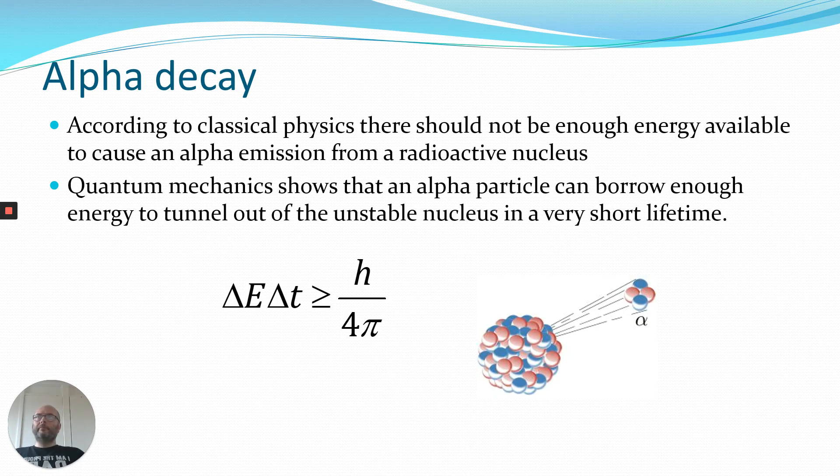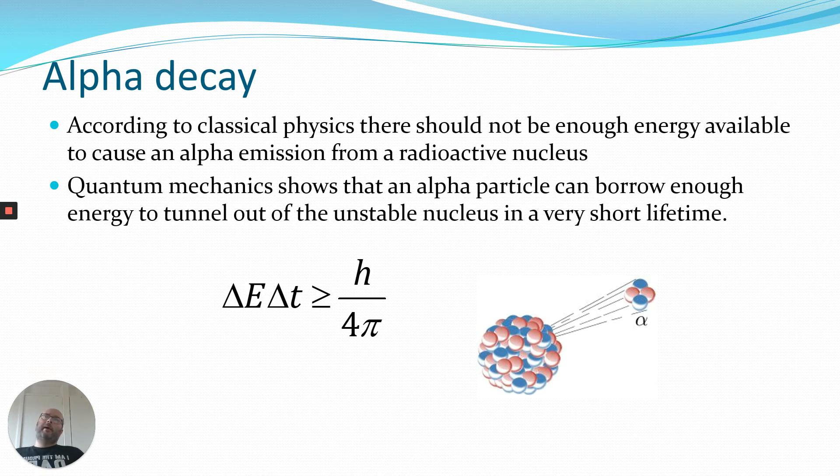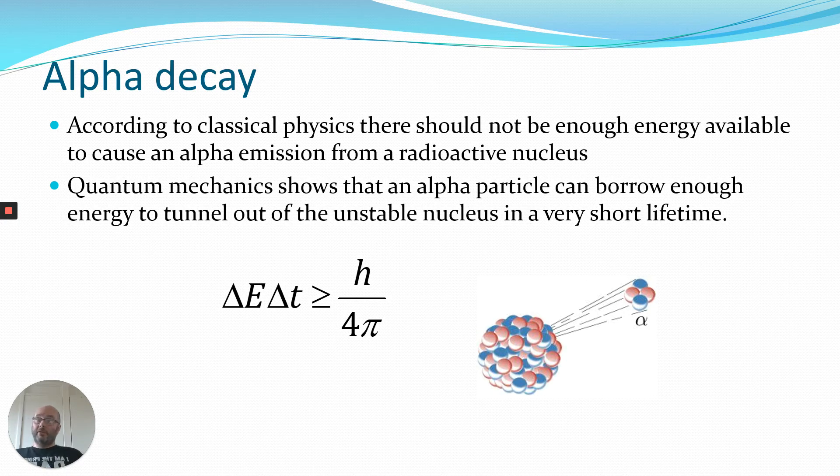Alpha decay is another one. According to classical physics, there is just not the energy available for an alpha particle to leave a large nucleus. And the only reason that is possible is because of the uncertainty in the energy. It can be very large over a very short space of time, and the particle can borrow energy to escape from the nucleus.